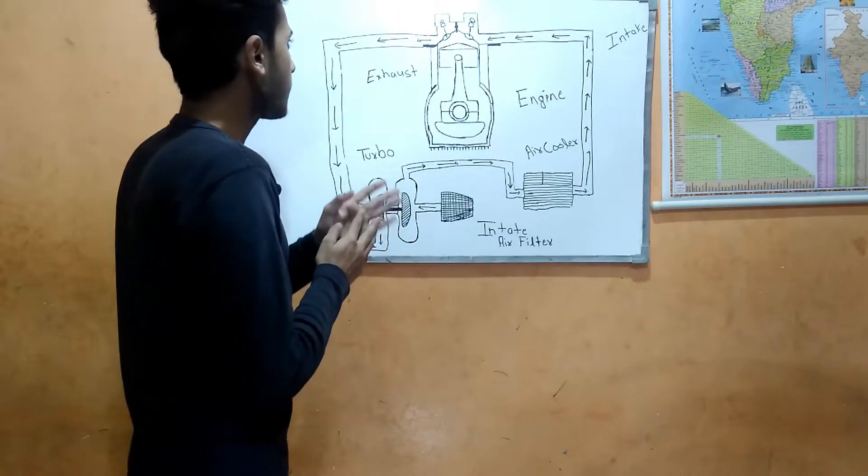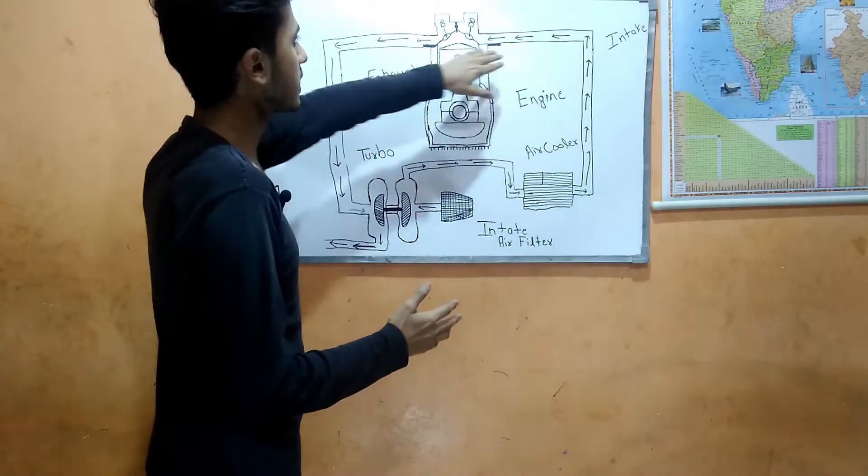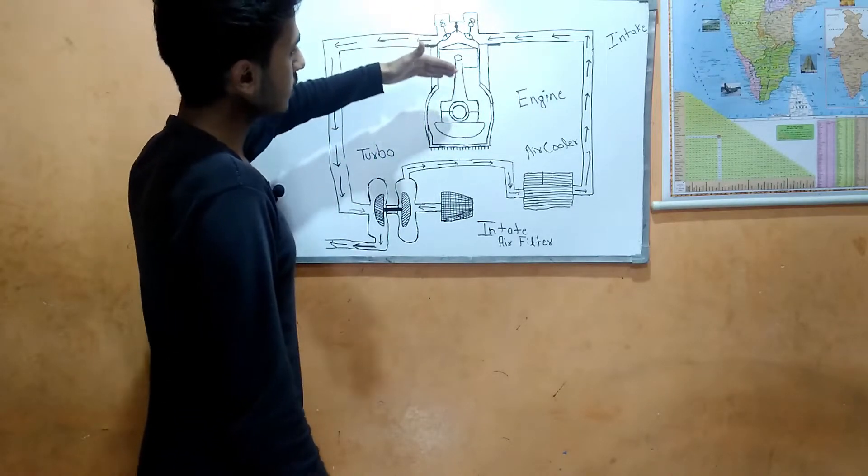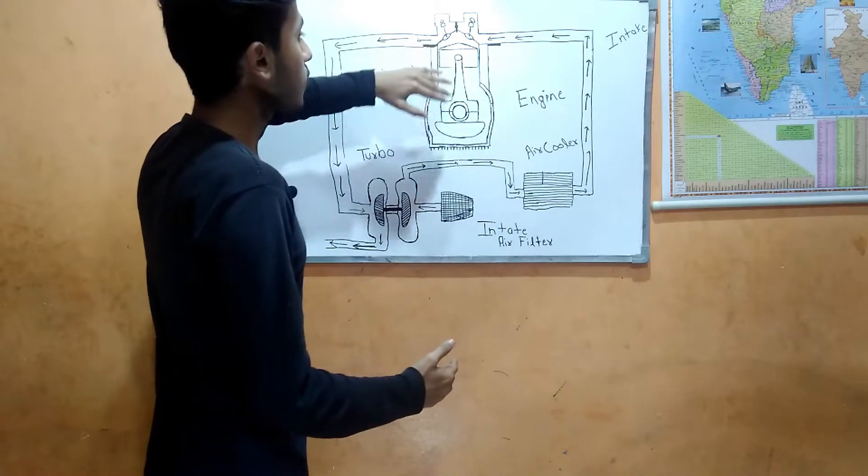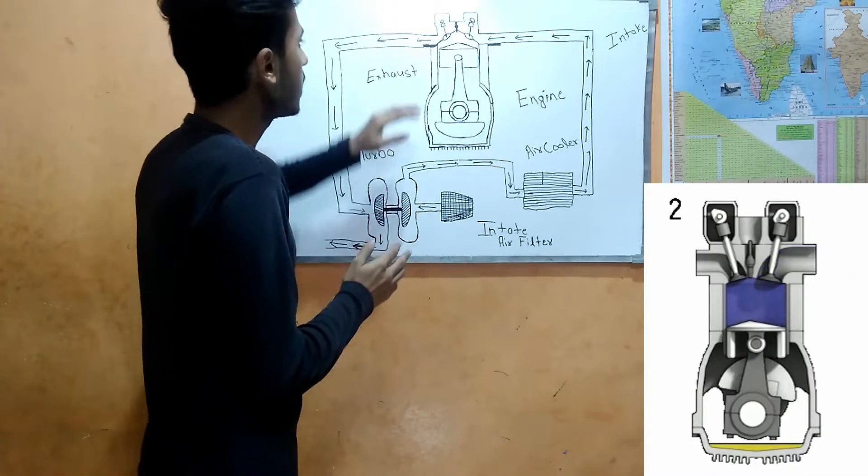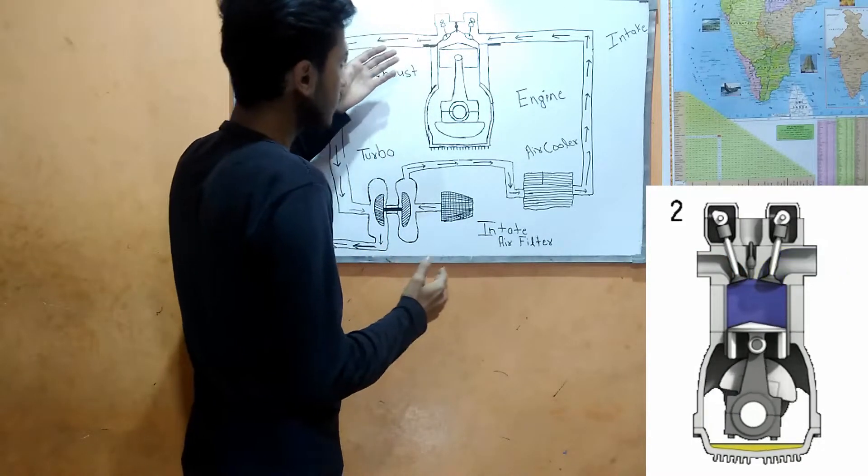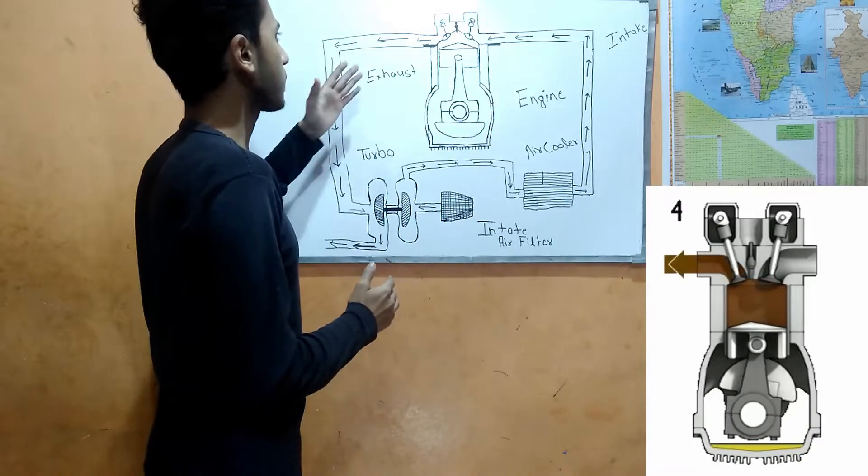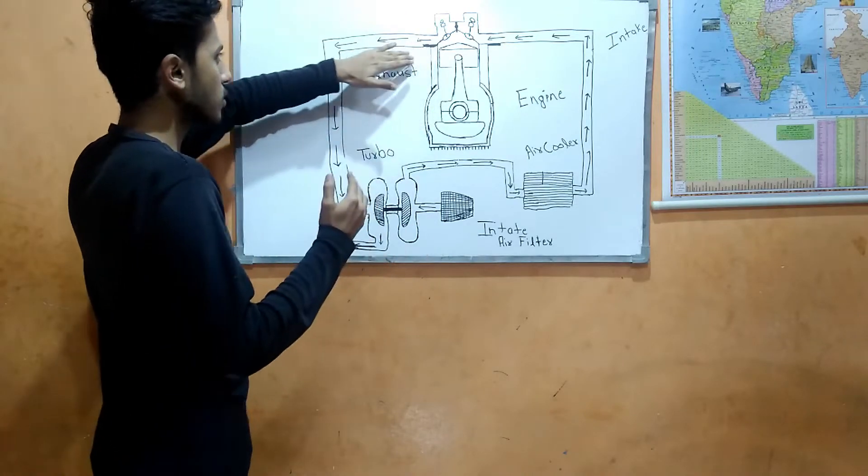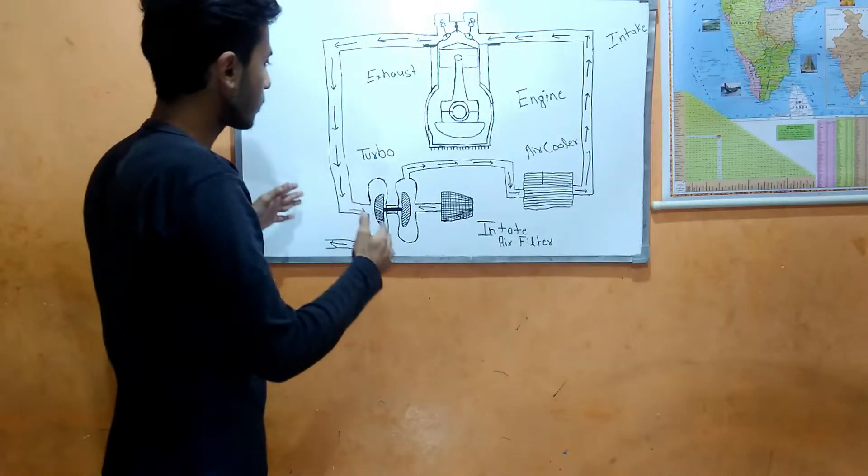First we have our intake stroke where fresh air comes into the combustion chamber. Then our compression stroke where the piston compresses the mixture. Then we have power stroke with combustion, and finally the exhaust stroke.